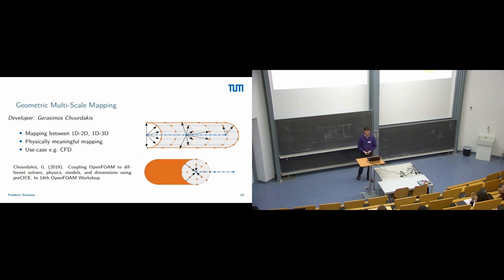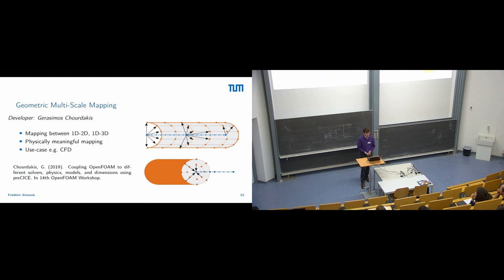By Gerasimos Chourdakis, we have Geometric Multiscale Mapping, which is a mapping between dimensions — 1D to 2D, or 1D to 3D. The idea is to have a physically meaningful mapping. There are many use cases like CFD and reactor safety. There will be no talk about this today, but there was an interesting talk at the OpenFOAM workshop. You can find those slides on Mediatom, and Gerasimos Makis is here in the room.